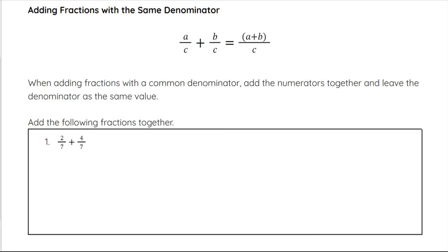We are going to go ahead and just add the top numbers, which are the numerators. In this case that would be A and B, and that's going to be your new numerator. And then our denominator, C, is going to remain the same when we add those numerators. So that's how we add fractions.